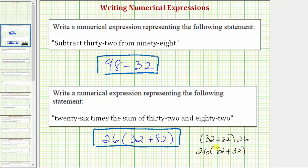This is another equivalent expression, and finally we could also write this as the sum of 82 and 32 times 26. So all four of these expressions are equivalent, meaning if we were to evaluate them we would get the same value, but based upon how the statement is written the best expression is 26 times and then in parentheses 32 plus 82.